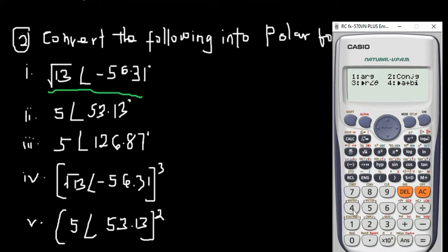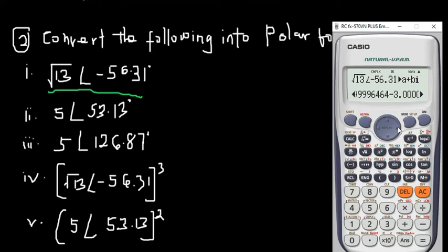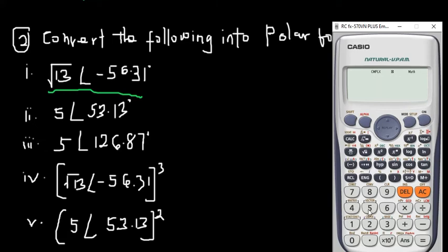Click option 4, then press equals. You get 1.999, which rounds to 2, and then negative 3i. So the rectangular form is 2 minus 3i.